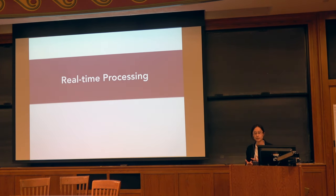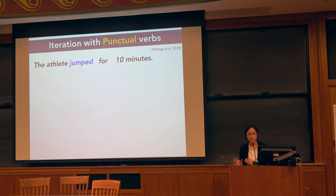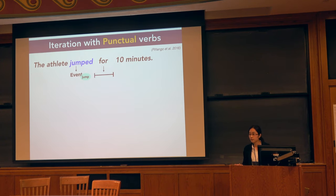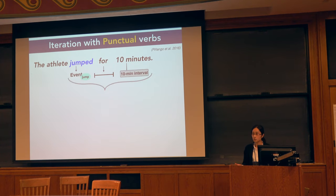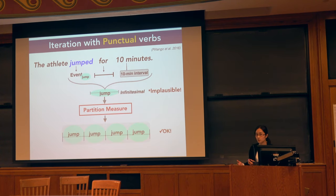Based on this semantic analysis, we formulate a processing hypothesis to capture real-time comprehension. For 'the athlete jumped for 10 minutes': upon encountering the verb, the processor retrieves the event representation. The 'for' adverbial introduces a 10-minute interval. The processor then builds an infinitesimal partition measure by default, giving you one jumping event lasting 10 minutes — which turns out implausible without larger context support. The processor then builds a non-infinitesimal partition measure, segmenting the 10-minute interval into a set of sub-events — giving you multiple jumping events during this 10-minute interval.